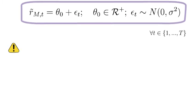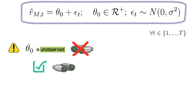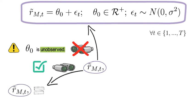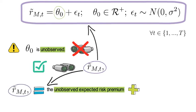Now note the following. The constant expected equity risk premium theta-0 is unobserved. The only quantity that you as an investor observe is r tilde mt. And that, going back to the previous equation, is the sum of the unobserved expected equity premium and the Gaussian white noise term.